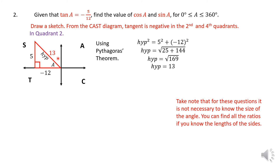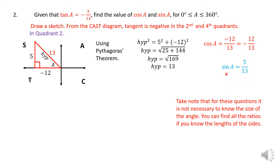Now we have all three sides of the right-angle triangle. We can find cos a and sine a using the ratios. Cos a is the adjacent, which is negative 12, over the hypotenuse 13 — the whole ratio is negative 12 over 13. Sine a is 5 over the hypotenuse 13, so that ratio is positive. Surely, the sine ratio is positive in the second quadrant.